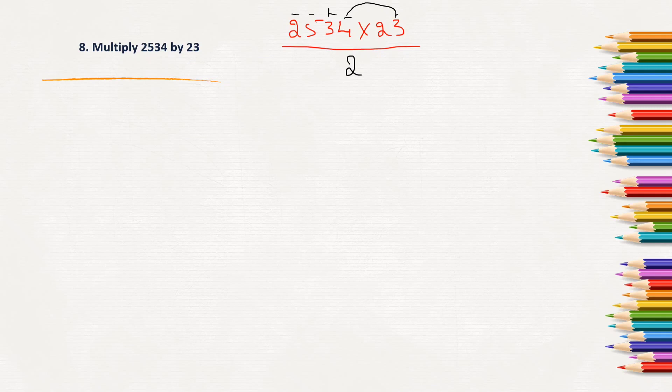3 times 3 will be 9 plus 1, 10, 1 carry. 3 times 5 is 15 plus 1, 16, 1 carry. 3 times 2 is 6, 6 plus 1, 7. So, when we multiply 2534 into 3, we will get the product as 7602.